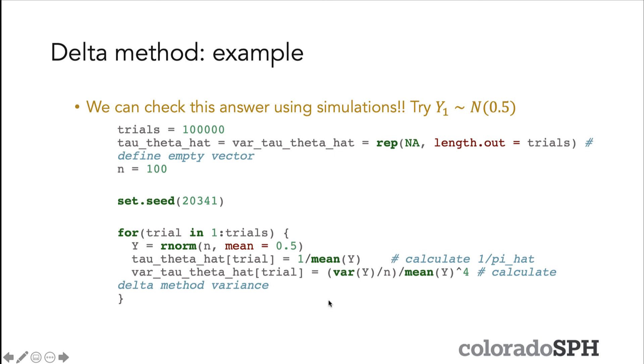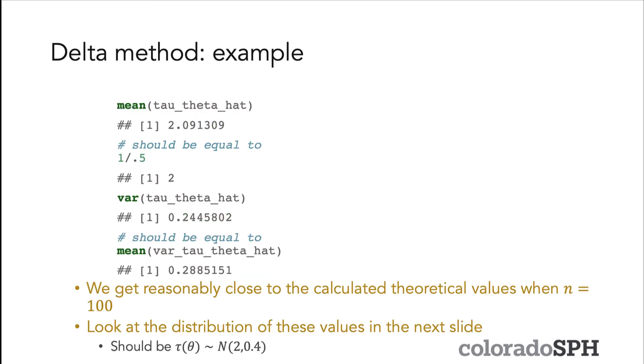I also calculate the variance of that transformed estimator. This is the estimate for the variance coming from the delta method. So if you run that code, then you get a mean value for 1/Ȳ that's estimated to be 2.09, which should be equal to 1 divided by 0.5 because we know that the true mean is 0.5 in our simulation example.